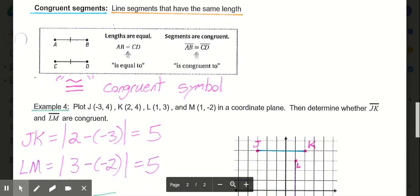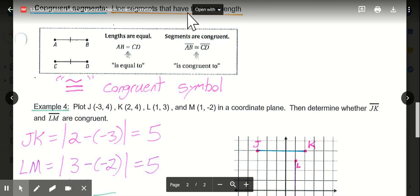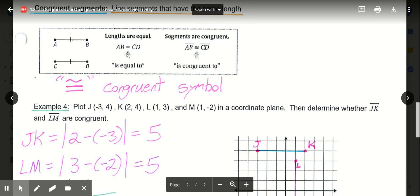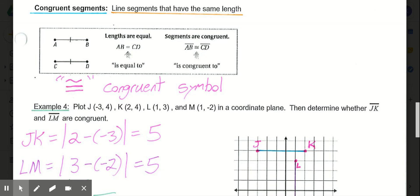Now our next definition to take a look at is the idea of congruent segments. So congruent segments are defined as line segments that have the same length. So again, segments can be measured because they have endpoints, unlike lines that go on forever. So congruent segments have the same length. So in other words, if our lengths are equal, meaning AB here is equal to CD here, we would read that as AB is equal to CD. Then we can say, because the lengths are the same, then we can say these segments are congruent. So the definition of congruent segments are segments that have the same length.